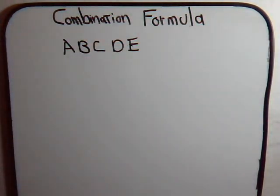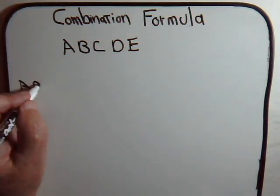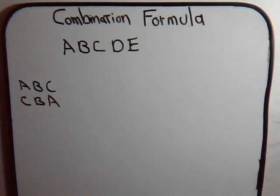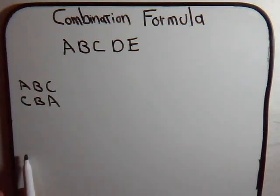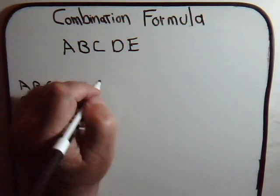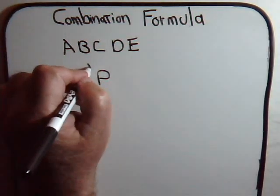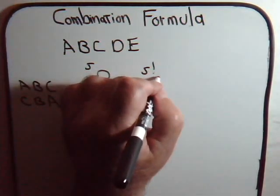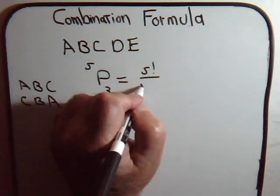Now let's say that we select three of them. We ask ourselves: how many different ways can we arrange these letters selected from these five? Well, the order matters. So for example, as we considered before, ABC is different from CBA. Even though the letters are all the same, the orders are different, and the order matters. From our previous videos, we know the number of arrangements we can make from these five letters using our formula, which is five factorial divided by five minus three factorial.